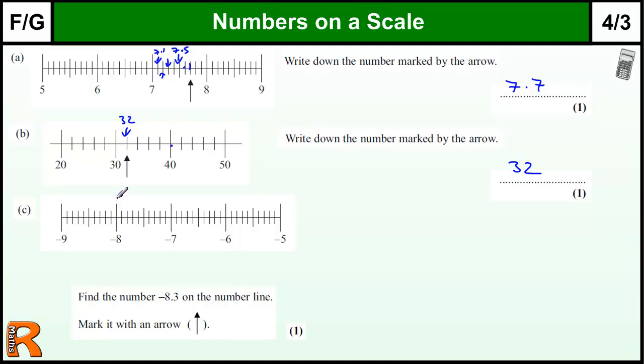So this is 8, minus 8. Now as we go this way, this is going to be minus 8.1. As we go this way, we're going to have minus 7.9. So we need to go to 8.3. So it's 8.1, minus 8.2, minus 8.3.